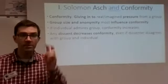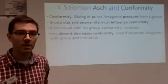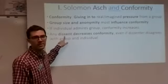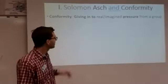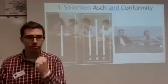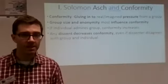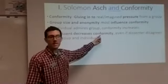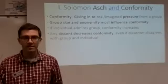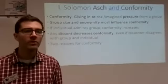Here's something interesting: if any of those confederates dissented — dissent being the opposite of conformity, to speak up or do the opposite of what everyone else is doing — even if someone in the group gave a different wrong answer, like B, simply having somebody break the group's unanimity gave others permission to dissent as well. So one dissenter makes it more likely for others to do something different.